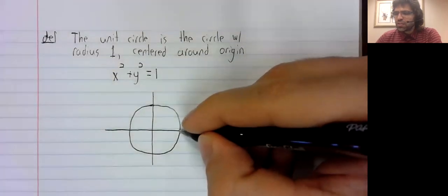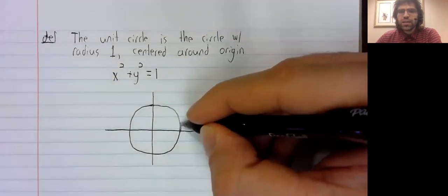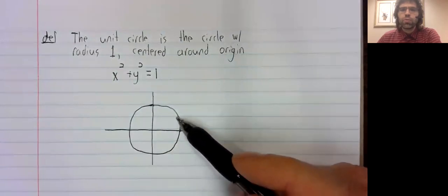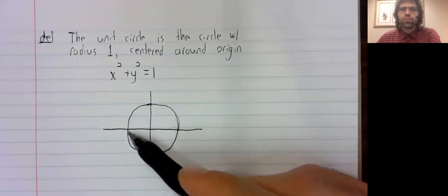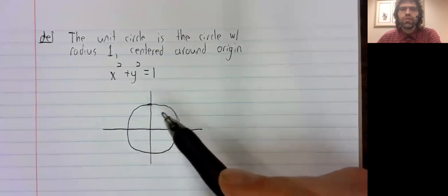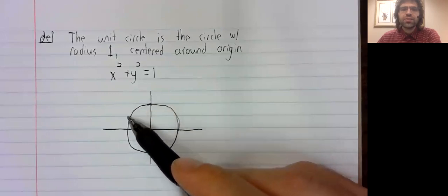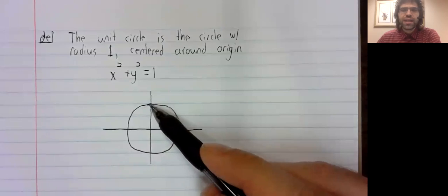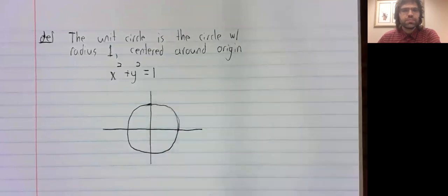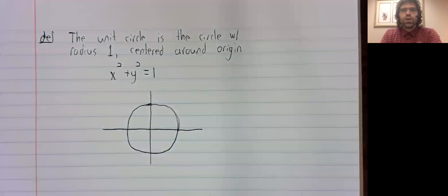And we think of that in terms of starting here and walking around the unit circle. As you walk around the unit circle, the same thing is happening over and over again. Like you hit this axis, you hit this axis again, you hit this axis again, and so on. We'll see concretely how to use the unit circle for this purpose fairly soon.